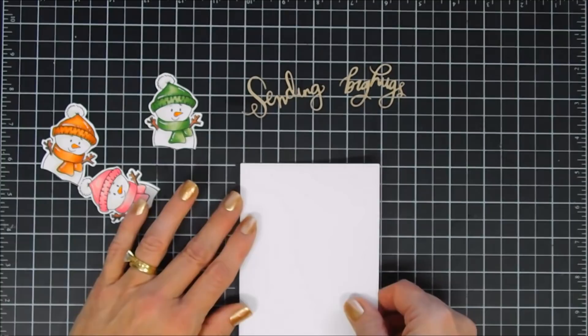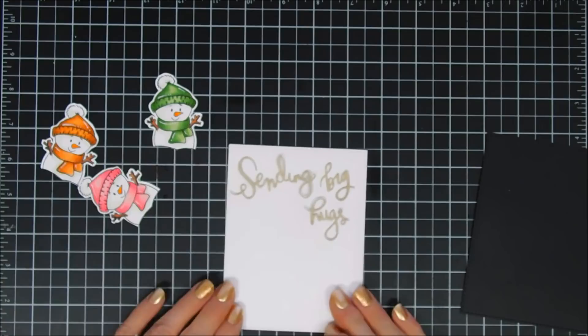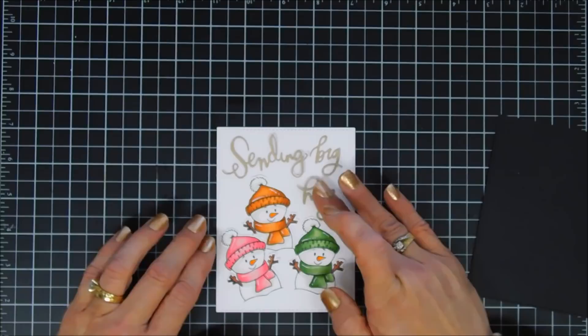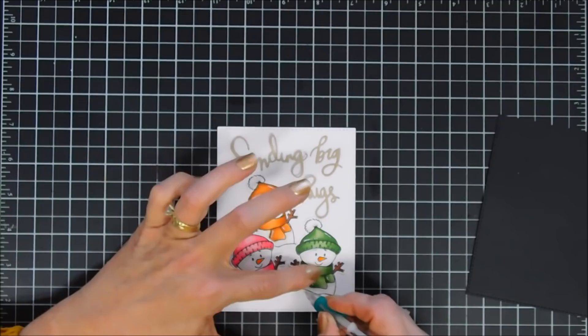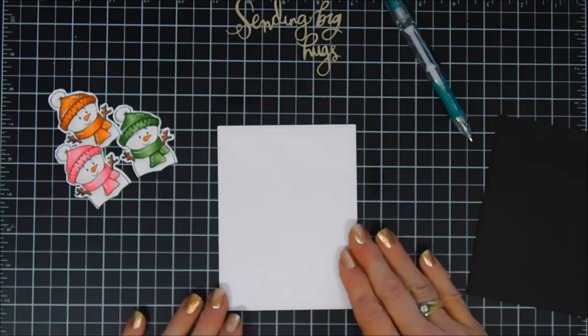This is going to help with the placement of our background here and making sure my sentiment fit. I wasn't sure it was going to fit. Okay, once I'm happy with the placement I'm going to take my pencil and mark just below the snowbank on all of my snowmen. This is going to help me with my placement and then also with my stamping.